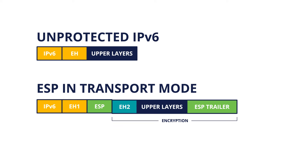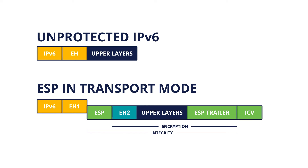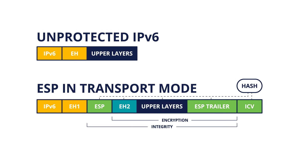When ESP is providing both integrity and confidentiality, then an Integrity Check Value, or ICV, is used. The ICV is computed using a hash function with inputs from the encrypted bytes following the ESP header, and some fields of the ESP header that won't change en route.